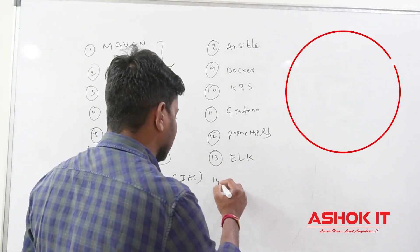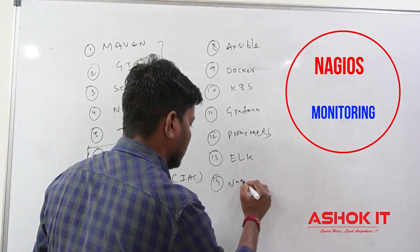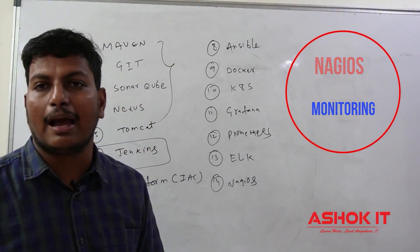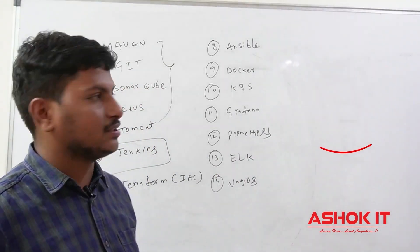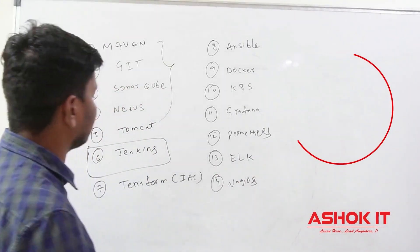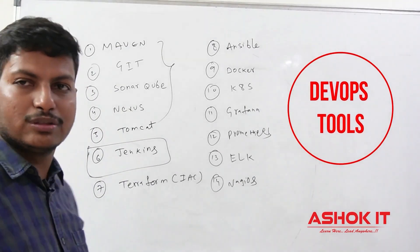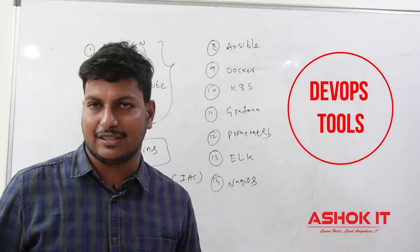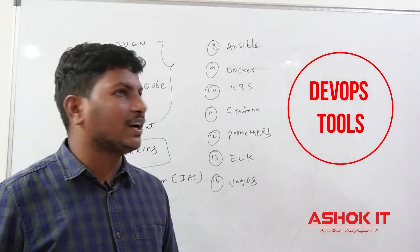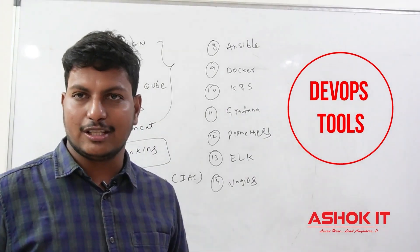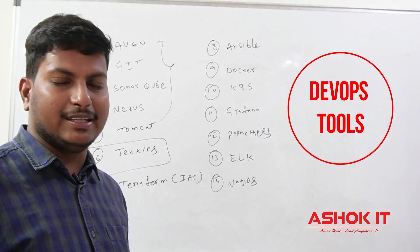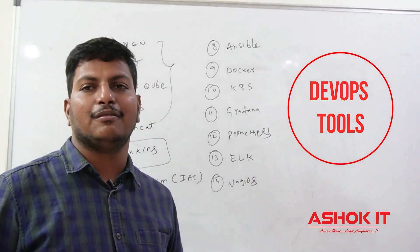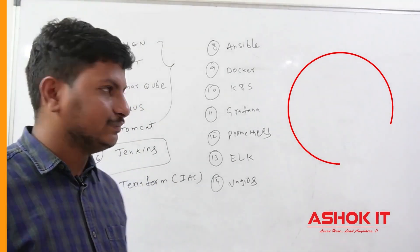Along with these things we are going to use Nagios. Nagios is used to monitor our application and application performance. So these are the several tools that we are going to use in our project for DevOps operations. I hope you understood this video. Thanks for watching. Please like this video and subscribe to our channel for more updates. Thank you.